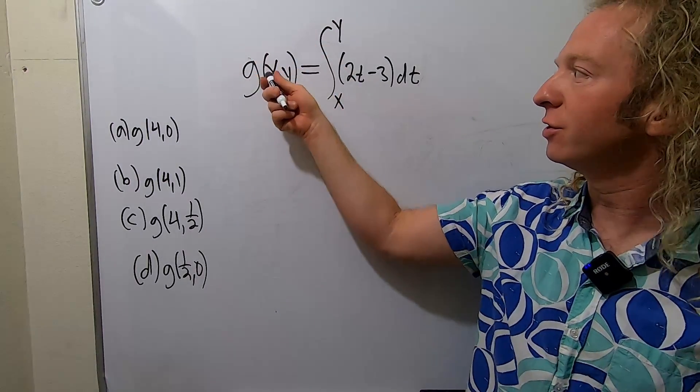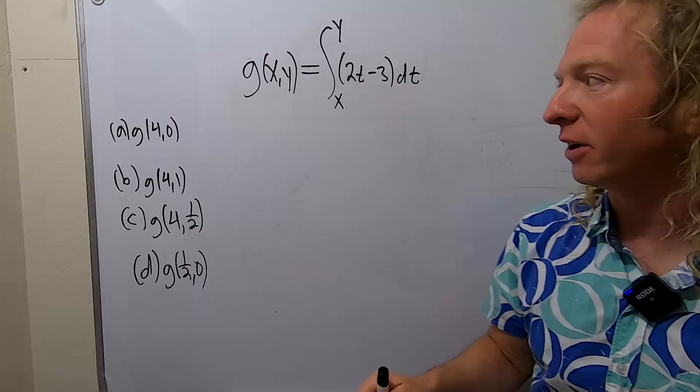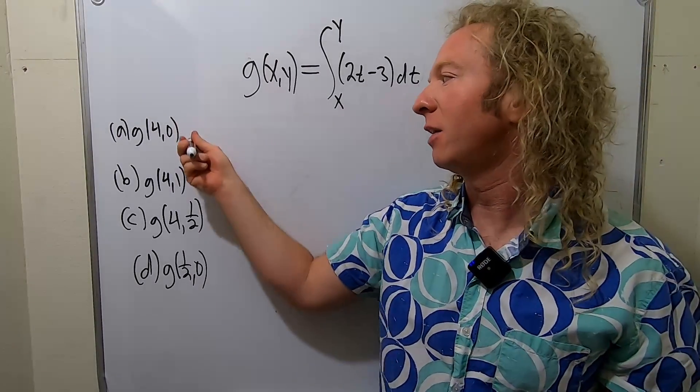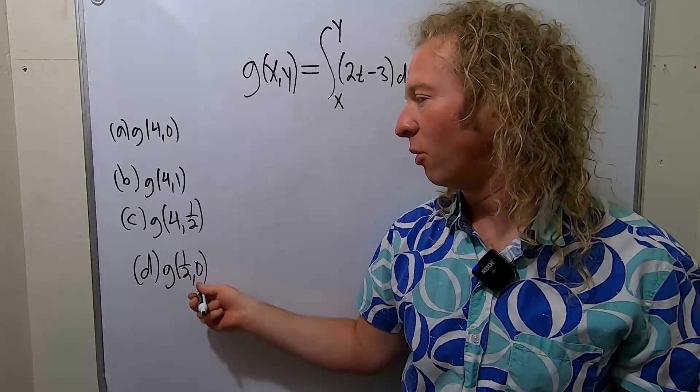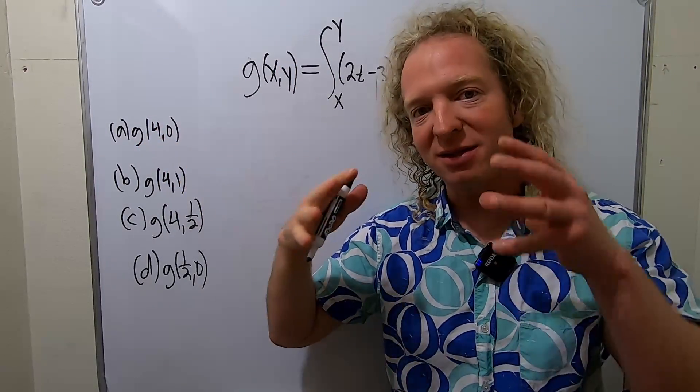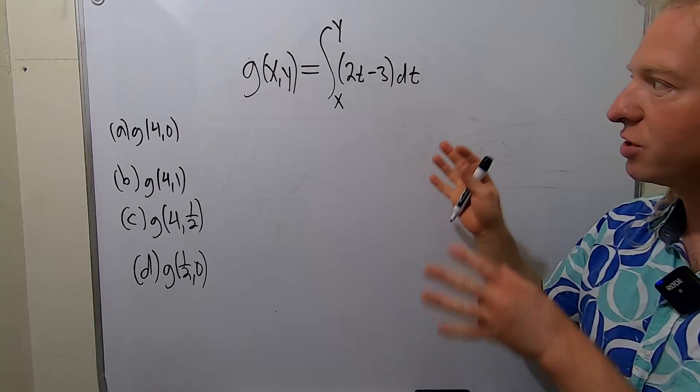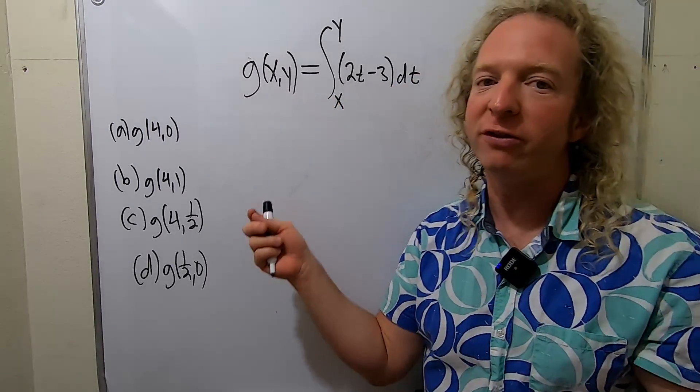In this video we have a function of two variables defined by a definite integral. It's a little bit funky and we have to evaluate it at various ordered pairs. The input is an ordered pair in the domain and the output is in the range. We're evaluating what's called a multivariable function.